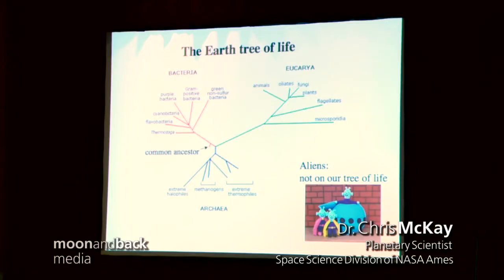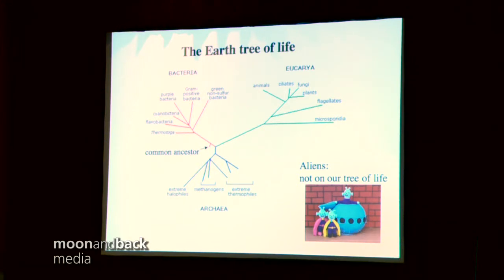Rex raised a good point, which is it's hard to know what's really not on your tree when you only have one tree. It's hard to know the boundaries of the tree when you only have one, and it's hard to know that you've got the complete tree when you've only got one. In some sense, we'll only be able to answer the question when we've got something else to compare to.